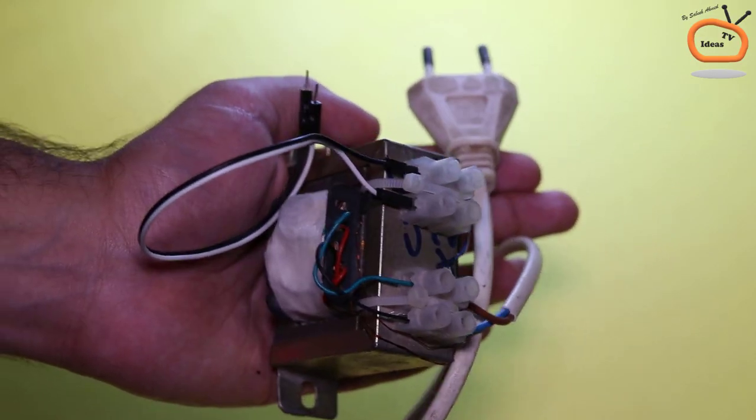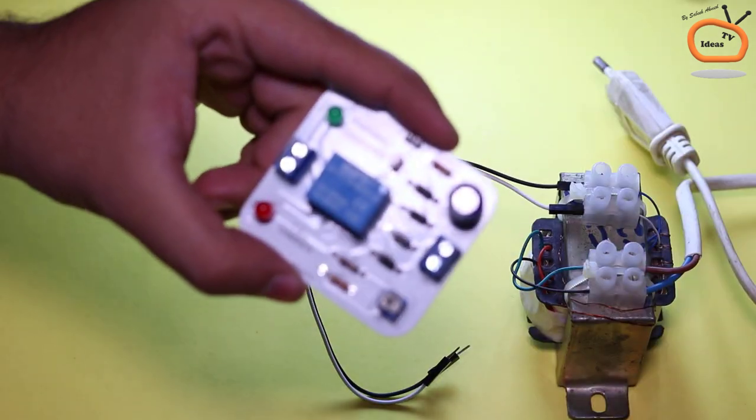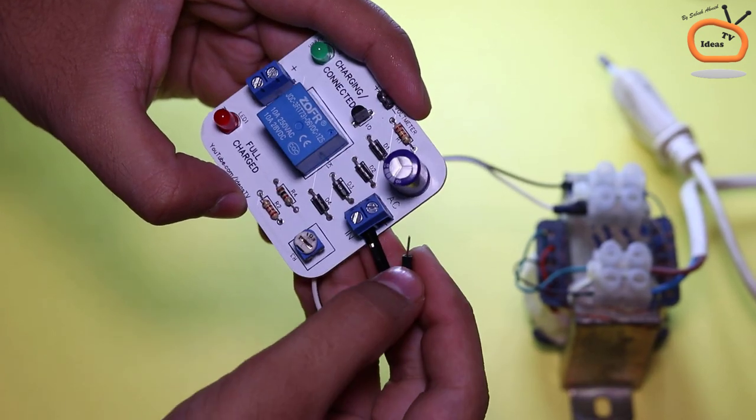Now I am connecting the 12V AC step down transformer to the circuit board. Make sure you are connecting the transformer to the AC input of the circuit.